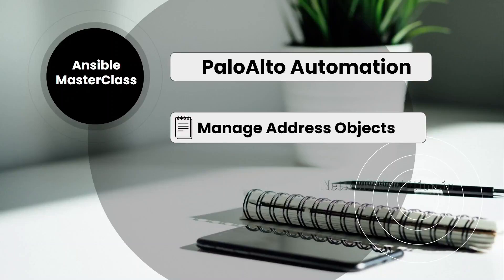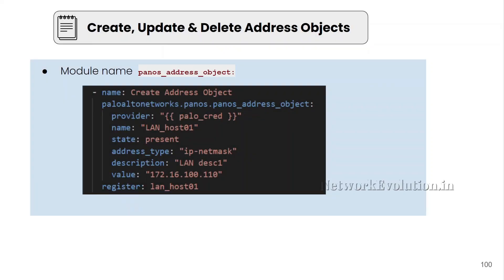In this tutorial, we will see how to manage Palo Alto address objects using Ansible. Here we will see how to create, update, and delete address objects using the pan_os_address_object module. Previously we have seen how to gather the address object details using the same module. That time we used state gathered.